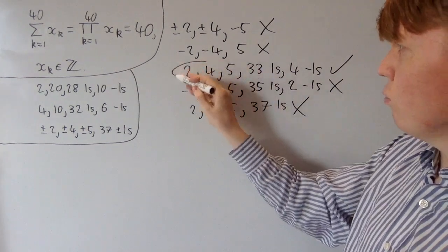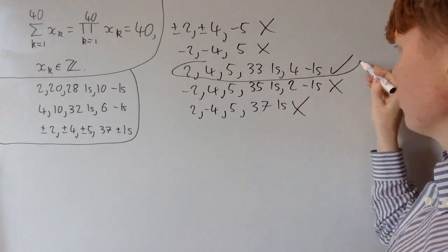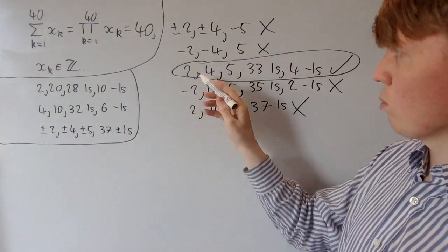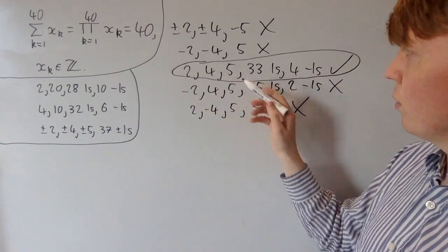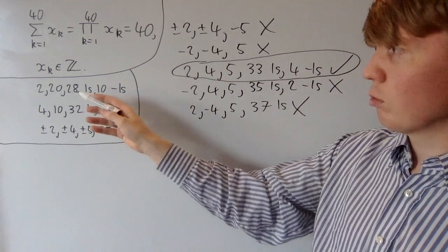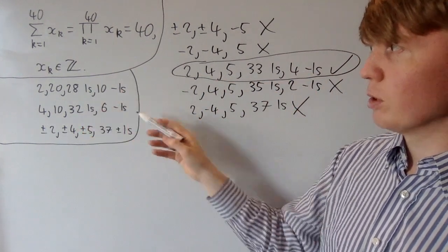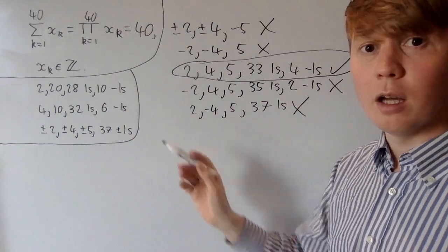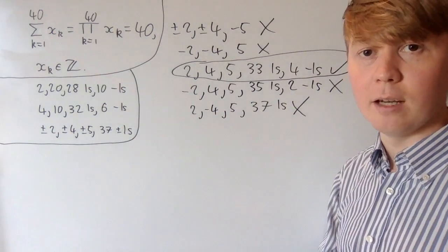We're left with three possible solutions up to different reorderings: 2, 4, 5 with 33 positive 1s and 4 negative 1s; 2 and 20 with 28 positive 1s and 10 negative 1s; and 4 and 10 with 32 positive 1s and 6 negative 1s.